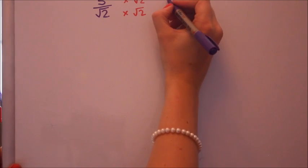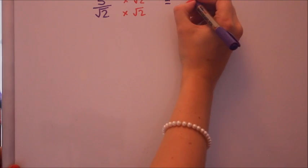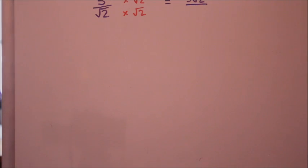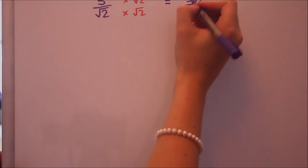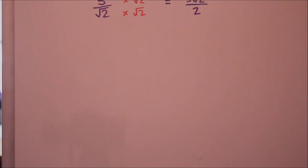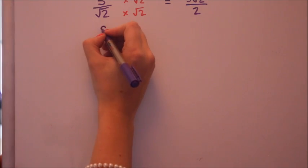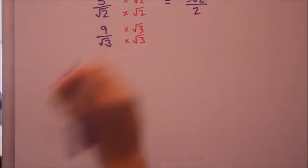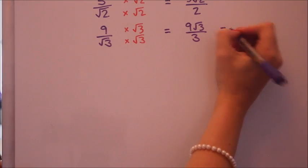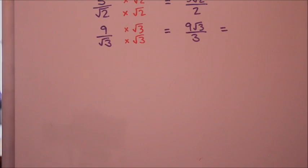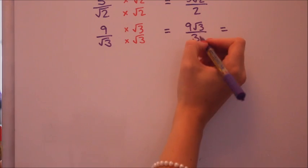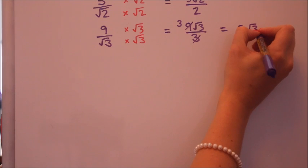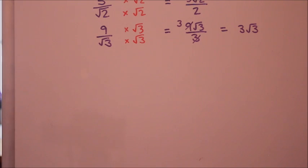Now the way to do that is to multiply the top and the bottom by that surd. So we're going to multiply by root 2 on the top and the bottom. On the top we'll get 5 root 2, and on the bottom we'll have root 2 times root 2, which is root 4, which is 2. Have a go yourself at 9 over root 3. In this one we can actually do a bit of simplifying down. The 9 and the 3 cancel. So we'll have 3 root 3 over 1, so we don't need to write the over 1, just 3 root 3.